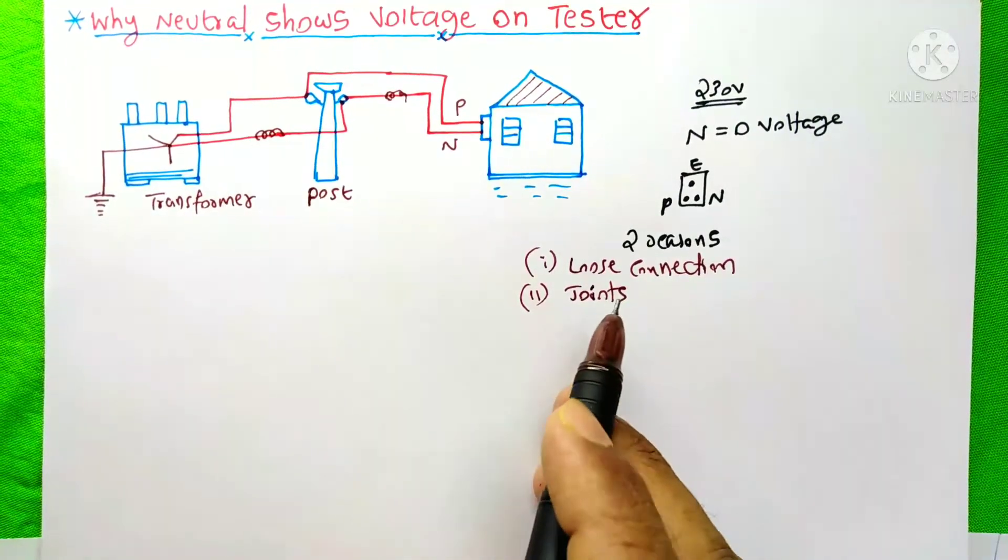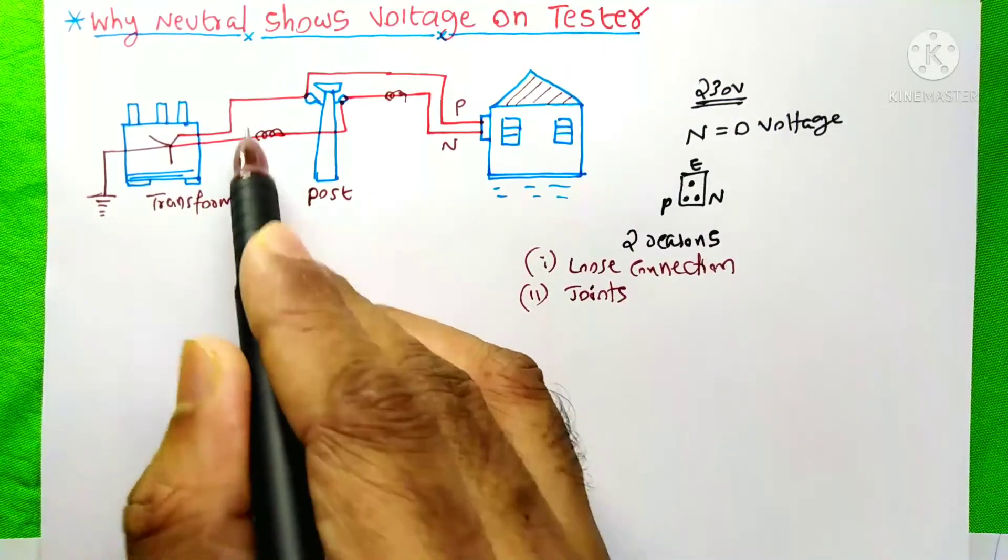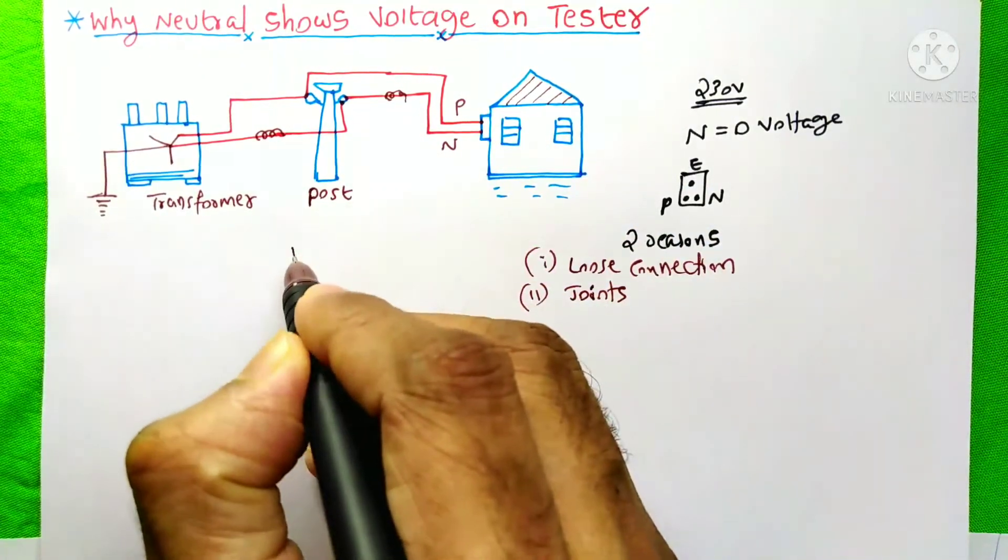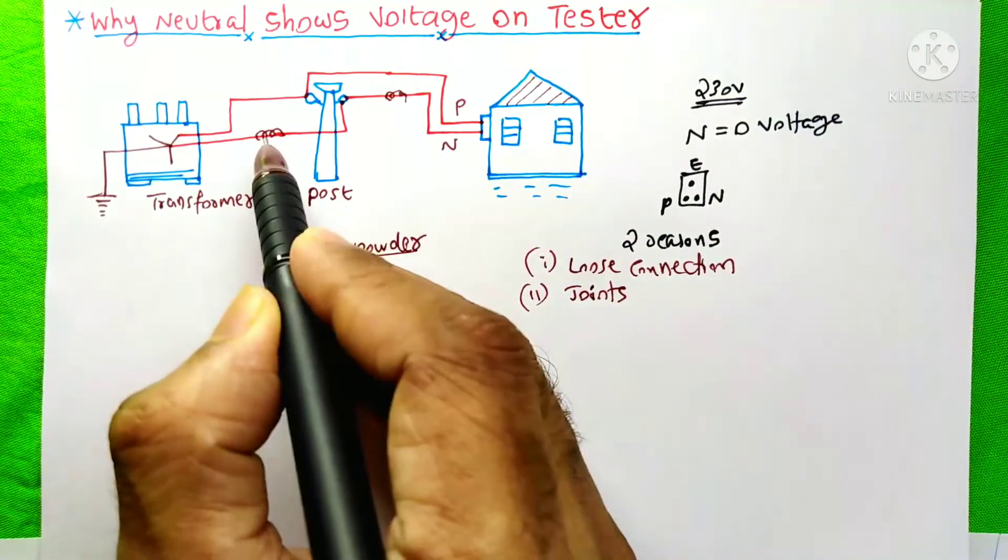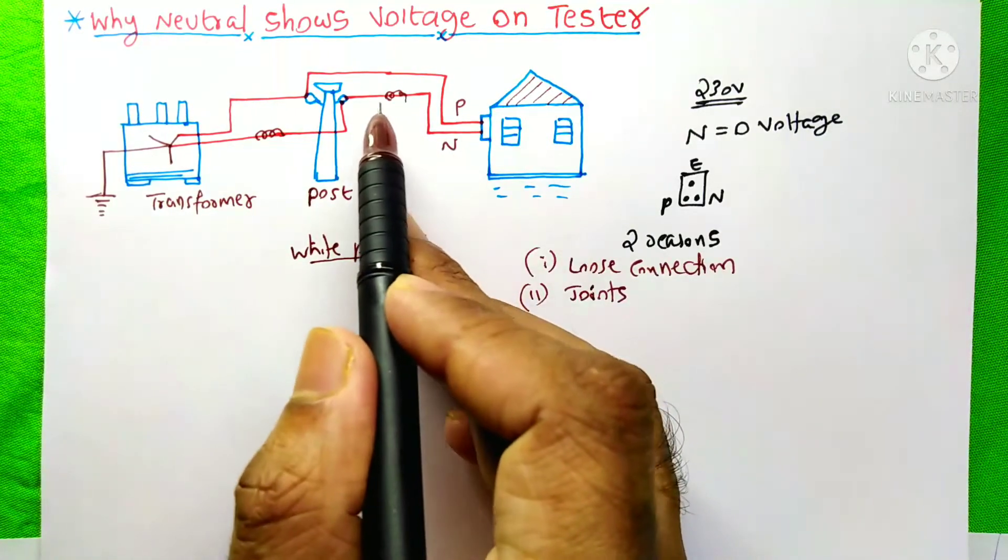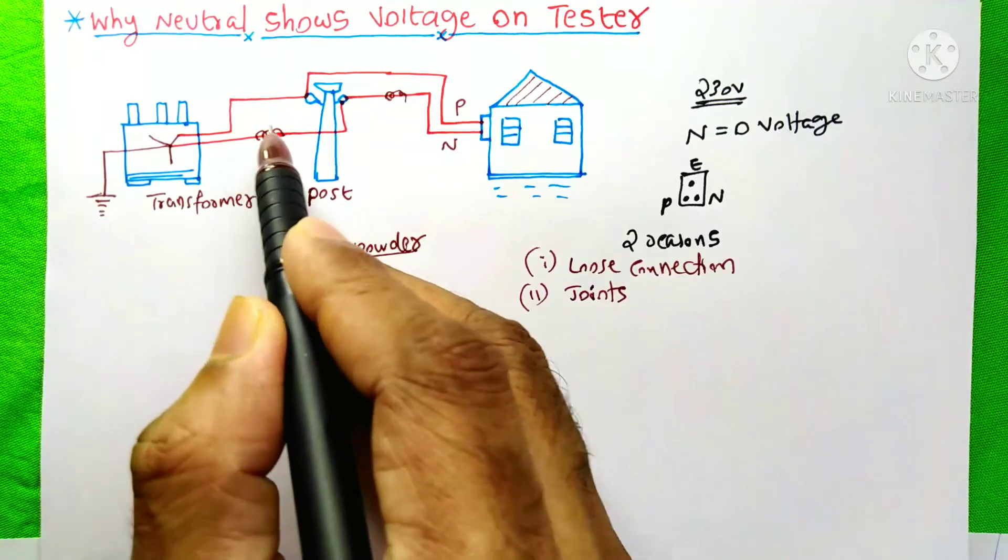During some urgent situations, when technicians made these joints, after some time, a white color powder will be formed on these joints. And due to that, the return current would be blocked by the white colored powder.